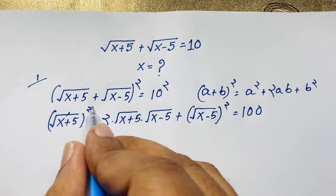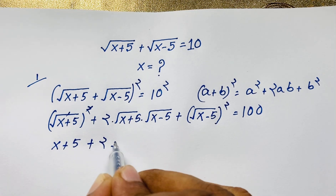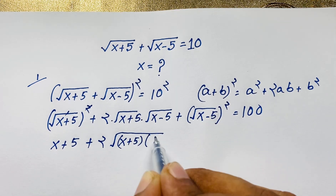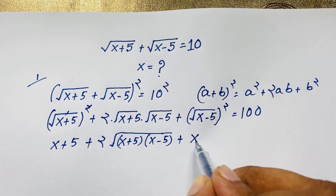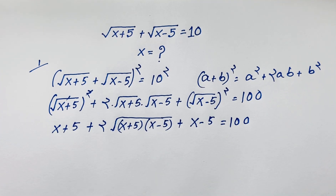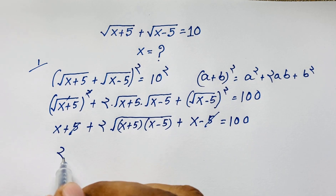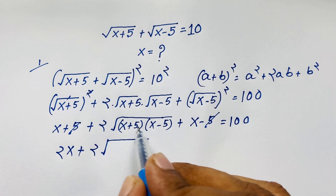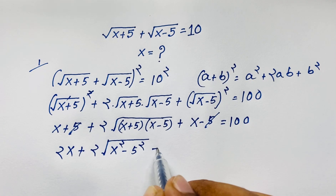Now this square is cancelled out, giving x plus 5. Then this is 2 times square root of (x plus 5) times (x minus 5). Then plus x minus 5 is equal to 100. The positive 5 and negative 5 cancel, and x plus x is 2x. Plus 2 times square root of (x plus 5)(x minus 5), which is x squared minus b squared, is equal to 100.